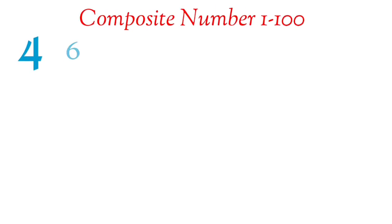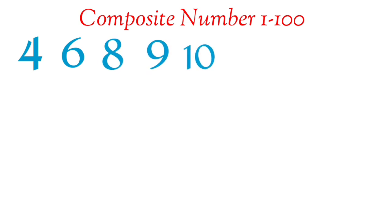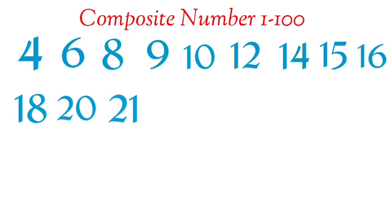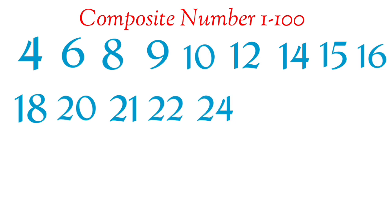Composite Numbers 1 to 100: 4, 6, 8, 9, 10, 12, 14, 15, 16, 18, 20, 21, 22, 24, 25, 26.